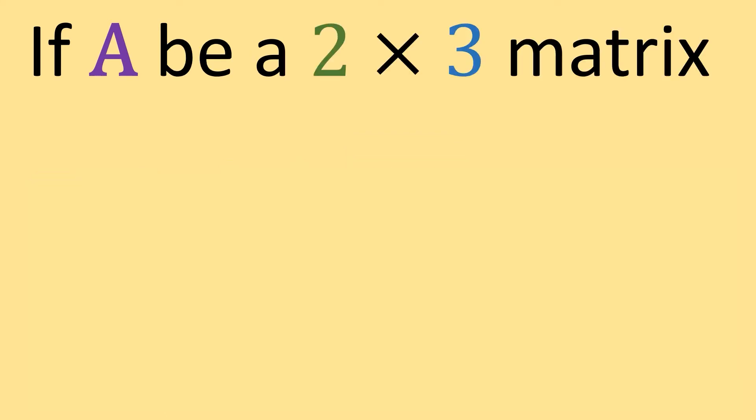For example, say A is a 2 by 3 matrix. Then A has 2 rows and it has 3 columns.